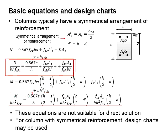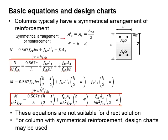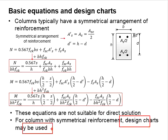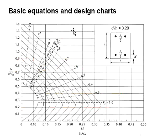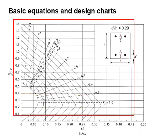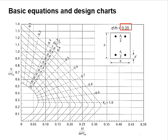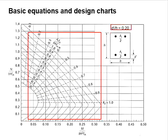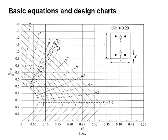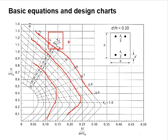Substituting the relevant values gives two simplified equations. However, these equations are very complex and not suitable to be solved directly, so a design chart is used instead. The design chart is constructed based on these two equations. There is a series of design charts with different ratios of d'/h, ranging from 0.05 to 0.25. Each chart differs slightly due to the different d'/h ratio.